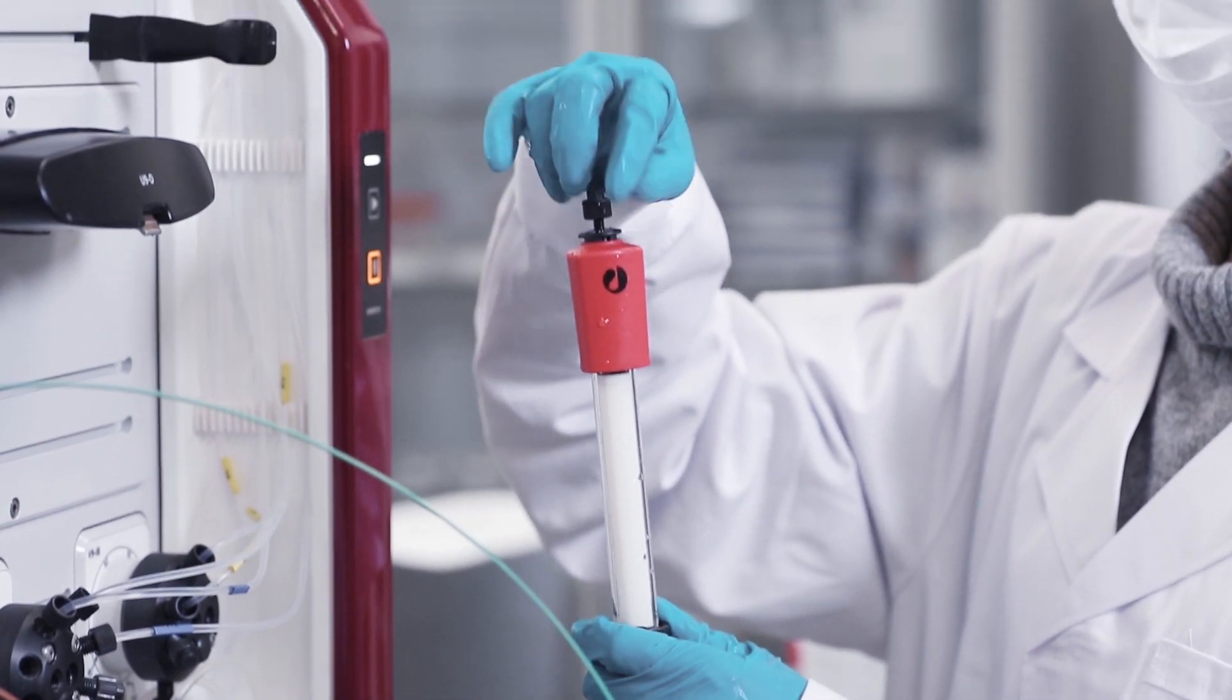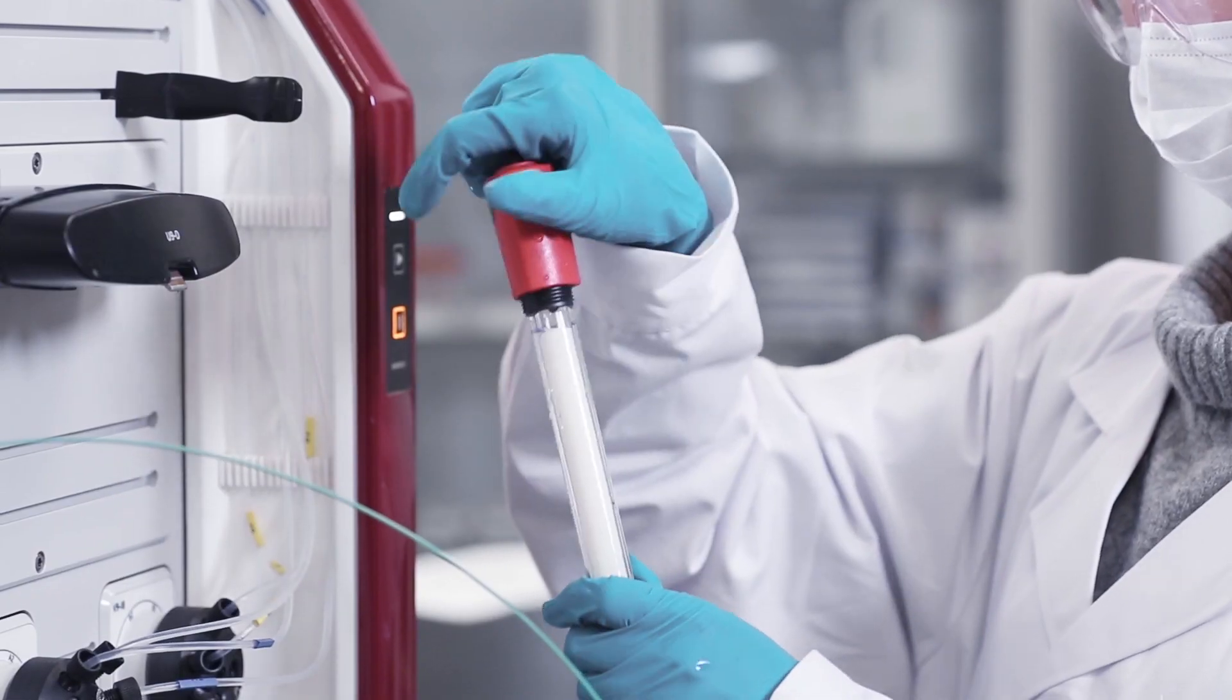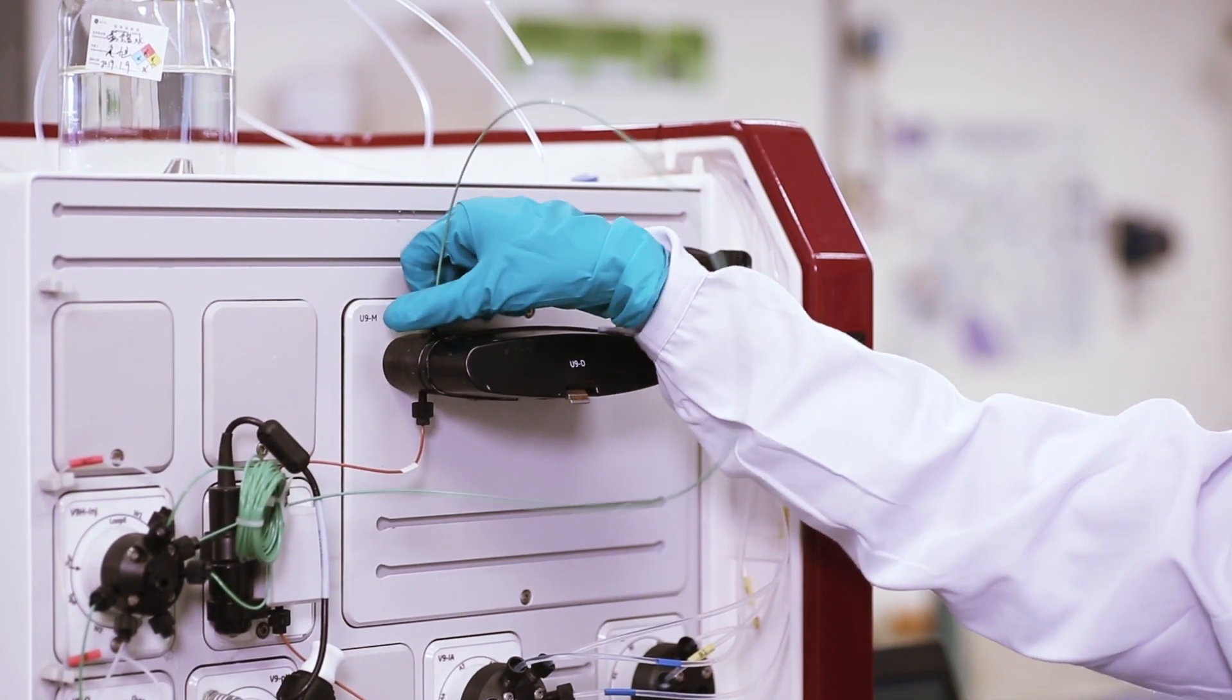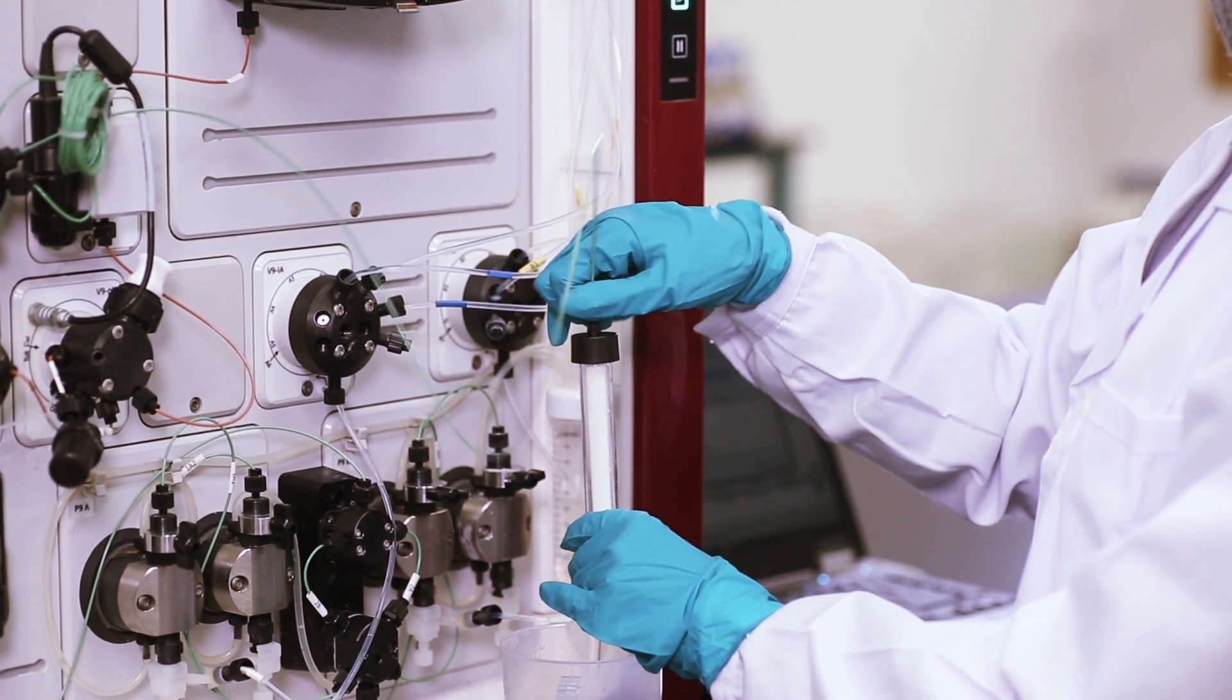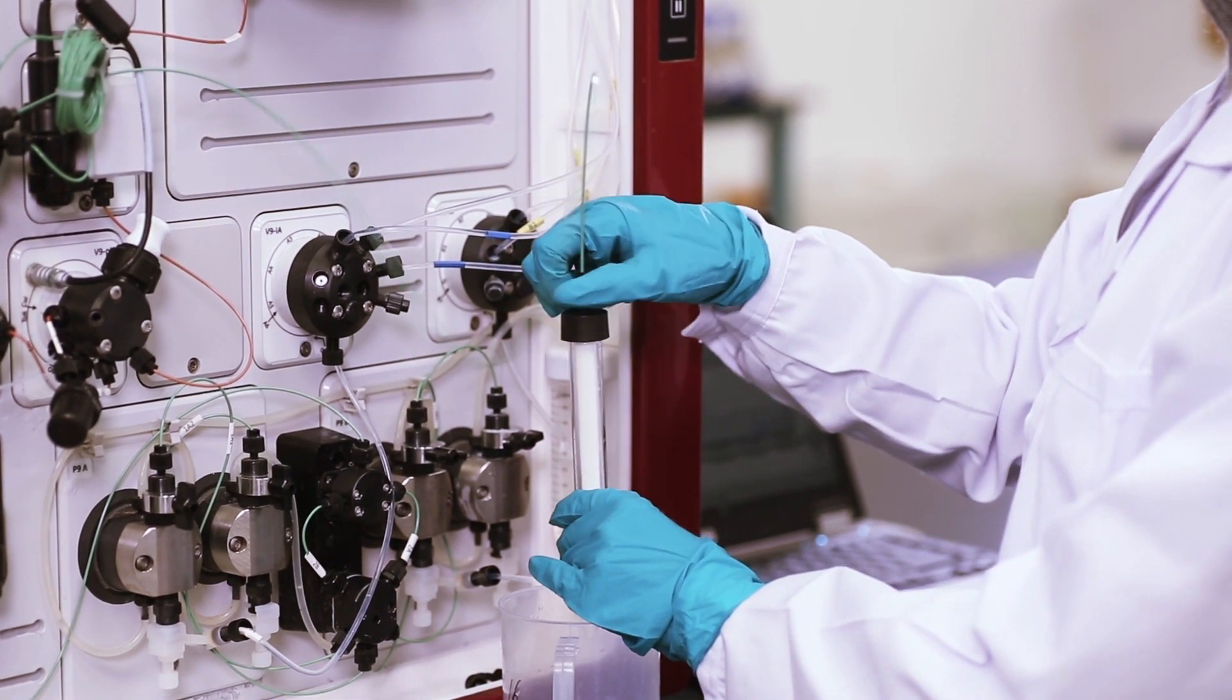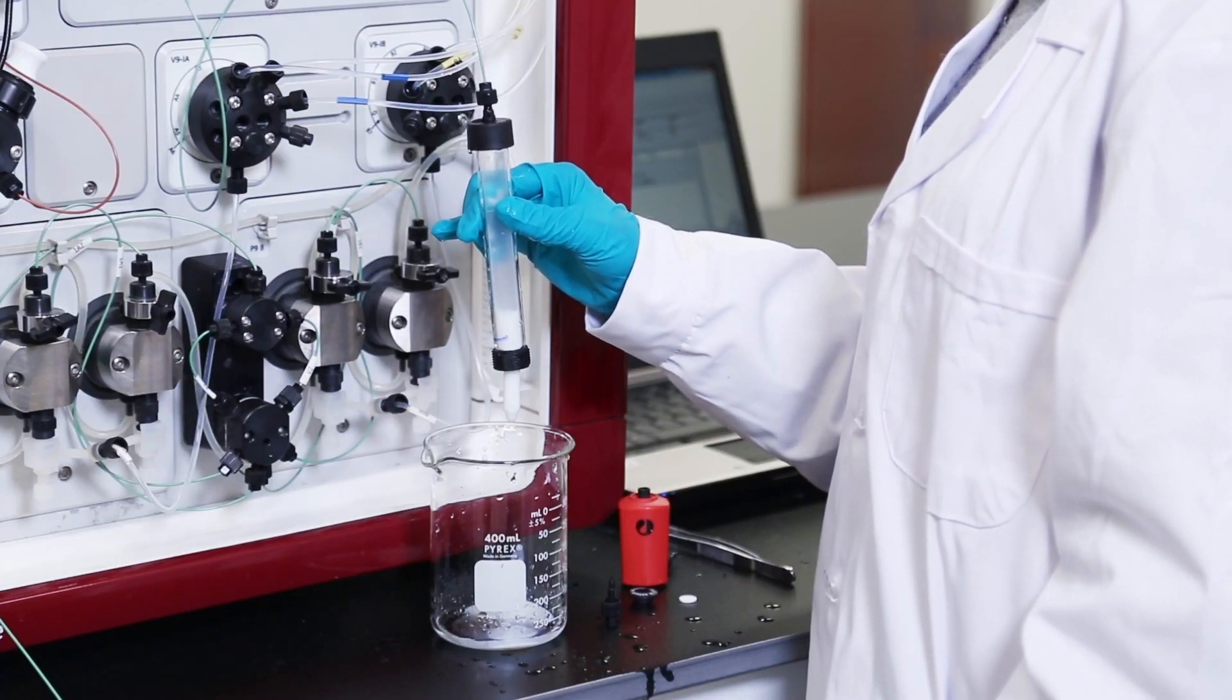Part of the packing process includes an efficient way to unpack the column. Remove the stop plug on top, remove locking ring, top adapter, and filter. Set appropriate pressure and flow rates in Unicorn. Place a beaker under the column and flush out the resin from the column using liquid flow. Your column and resin can now be reused.